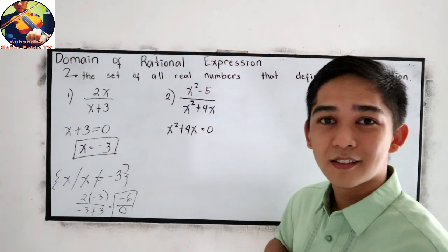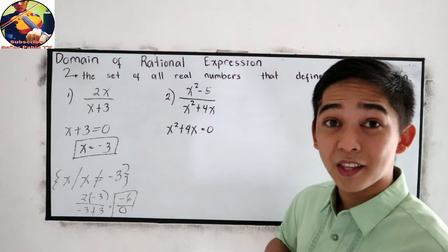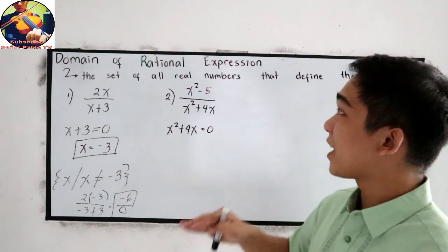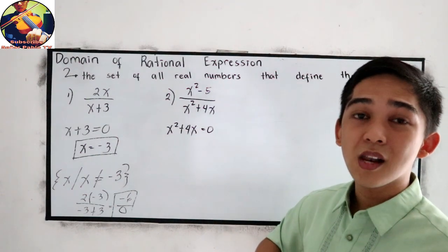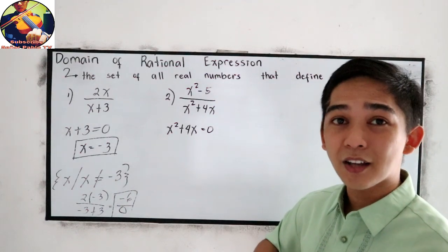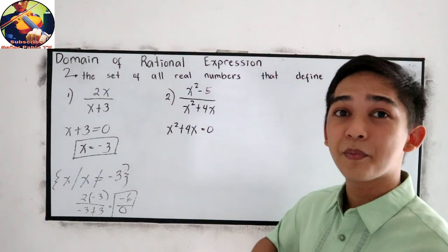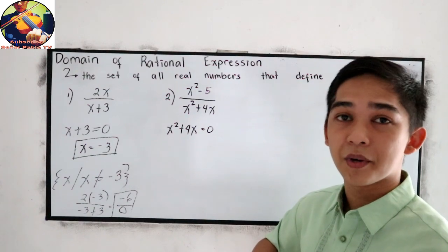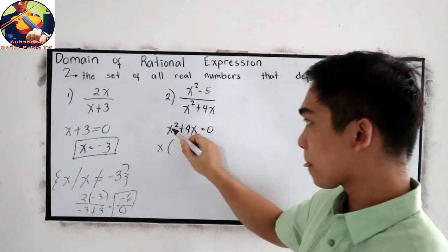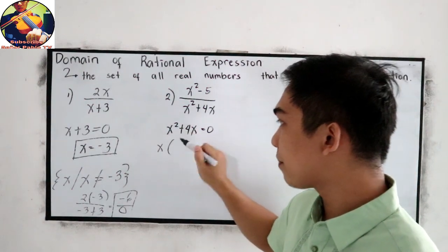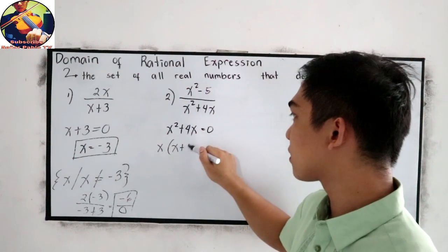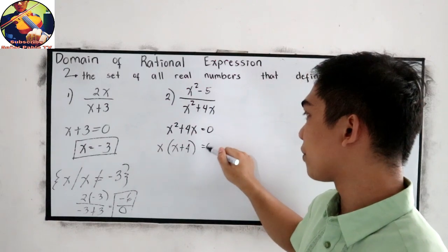Find the factor. So let us use the greatest common factor. Again, to understand our rational expression, we need to master all our factoring techniques: the greatest common factor, difference of two squares, perfect square trinomials, and the general trinomials. So common factor is x. Then, x squared divided by x is x, plus 4x divided by x, is equal to 0.